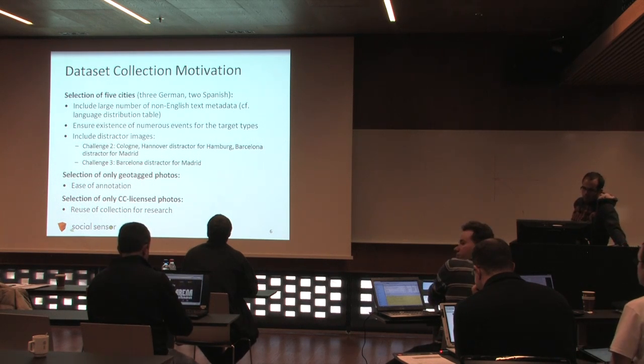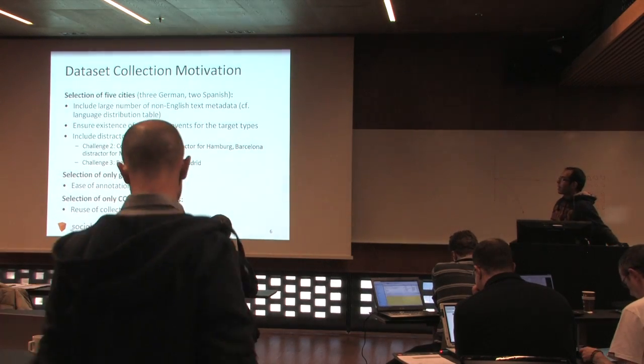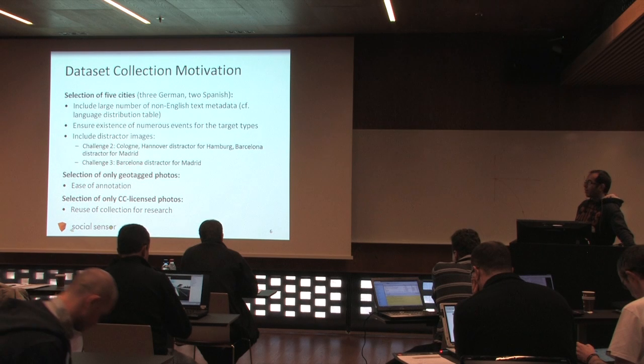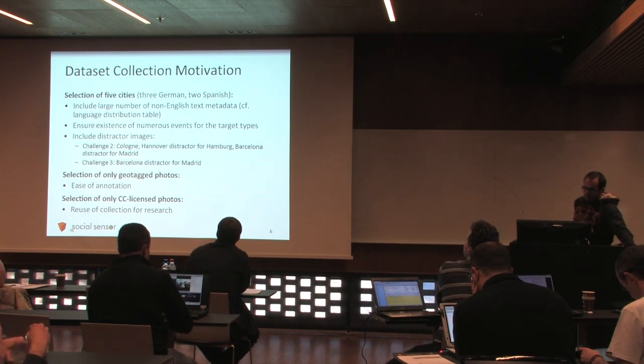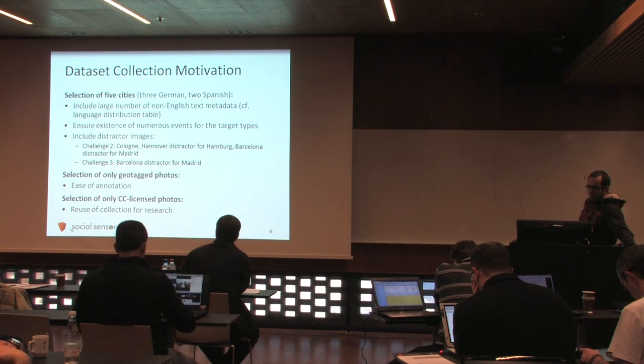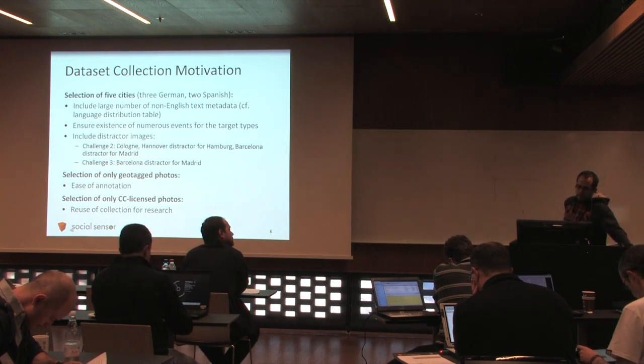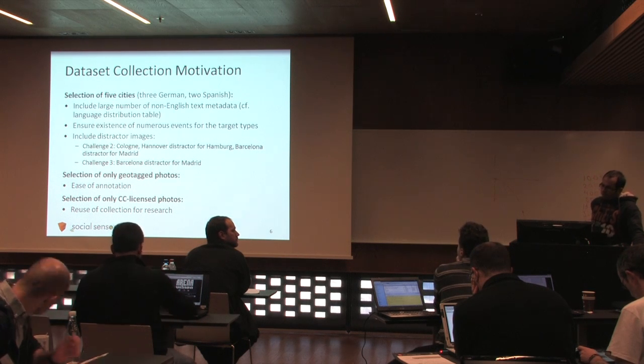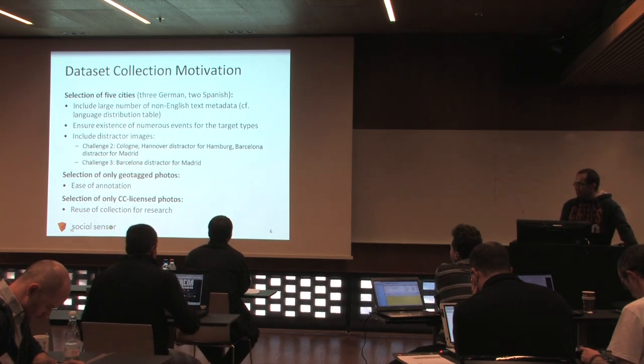First of all, we wanted to have a large number of non-English textual metadata in order to have language agnostic methods tested on this dataset. We also wanted to ensure the existence of numerous events of the target types, and we wanted to have distractor images. For instance, in the case of the second challenge where we want soccer events in Madrid and Hamburg, we also have soccer events in Cologne, Hanover, and Barcelona, so those act as distractors to the target events. The same for challenge 3: we have Indignados movement events both in Barcelona and Madrid, but we want only those in Madrid. We also selected only geotagged photos which helped us with annotation, and we selected only CC licensed photos in order to be able to share the dataset and the images themselves.